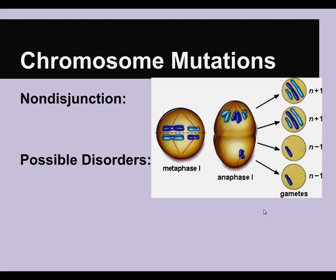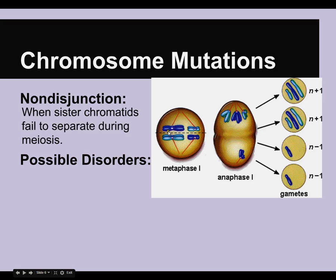Another type is called non-disjunction. Let's break down this word — 'junction' is where two things meet, so 'disjunction' is where two things don't meet anymore. Non-disjunction is when they don't come apart — when they are still joined. Sister chromatids in metaphase 1 of meiosis don't separate, and that results in having two of those long chromosomes when there should only be one. Some gametes end up with two of that chromosome, and some don't have that chromosome at all. Non-disjunction leads to disorders where you have an extra chromosome.